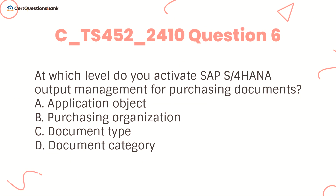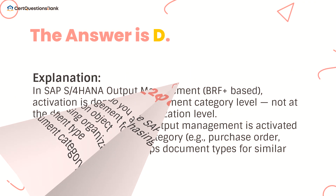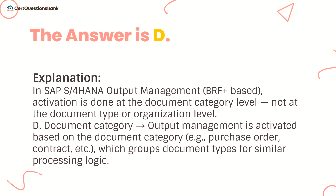At which level do you activate SAP S/4HANA output management for purchasing documents? A. Application object. B. Purchasing organization. C. Document type. D. Document category. The answer is D.